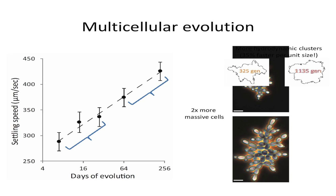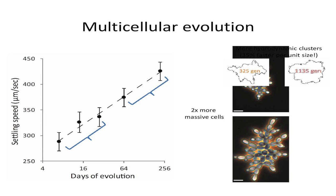We continue to evolve these yeast over thousands of generations in the lab. After about 1,000 generations of adaptation, we find our yeast evolved to settle faster and faster. They form bigger clusters containing more cells, and they also evolve more massive cells — we get a one-off step where cell size increases by more than two-fold, resulting in faster settling. But as they get bigger and bigger, they begin to push up against a constraint: large clusters don't grow as fast as small clusters, because cells on the inside become resource-limited.